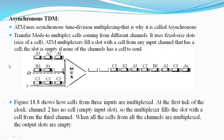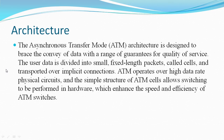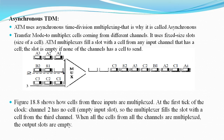Asynchronous TDM. ATM uses asynchronous time division multiplexing — that is why it is called Asynchronous Transfer Mode — to multiplex cells coming from different channels. It uses fixed size slots. The figure shows how cells from three inputs are multiplexed. At the first tick of the clock, channel two has no cell, so the multiplexer fills the slot with a cell from the third channel. When all the cells from all channels are multiplexed, the output slots are empty.